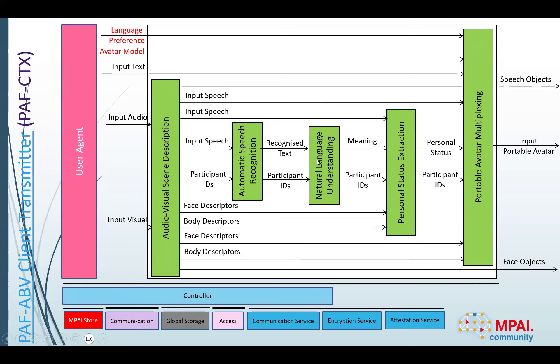This diagram depicts the architecture of the composite AI model of the client transmitter. A user agent provides inputs like language preferences and the selected avatar model. Text, audio, and visual data are captured from the user using various sensors, then processed by various AI modules to extract audio-visual descriptions and perform operations like speech recognition, language understanding, and personal status extraction. Finally, all these outputs are multiplexed into speech and face objects that make up a portable avatar.